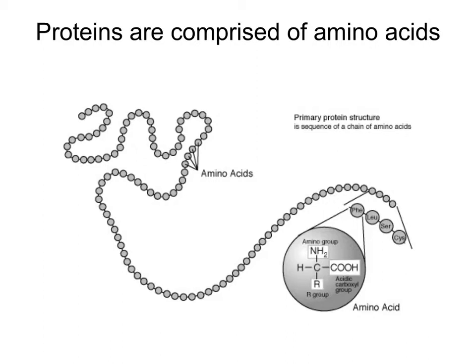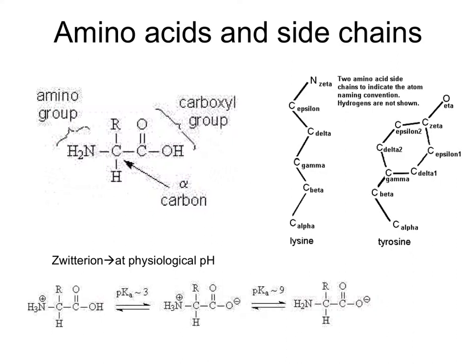All bioprocesses are mediated by proteins, and all proteins are comprised of linear combinations of amino acids. An amino acid is comprised of an amino group and a carboxy group, and at the alpha carbon, an R chain. Anything extending beyond the alpha carbon would be beta, gamma, delta, epsilon, et cetera.